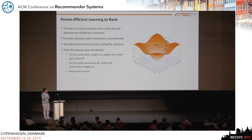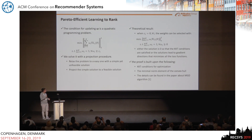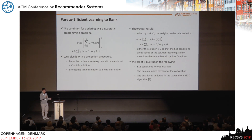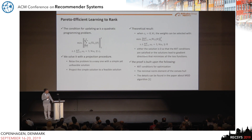Here is an illustration of our idea. The condition for updating omega is a progressive programming problem, which is very difficult to solve. We solve it with a two-step procedure. First, we relax the problem to an easier one so that a simple yet infeasible solution is achieved. In the second step, we project the solution back to a feasible one. When the constraints are zero, the solution to this problem is zero and the global optimum is achieved; otherwise, the solution is a descent direction that minimizes all the loss functions.